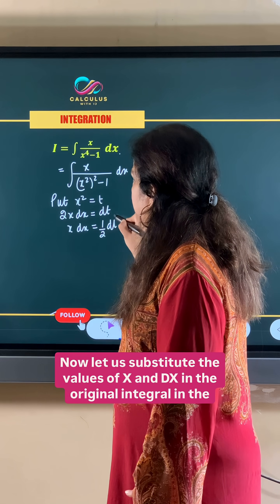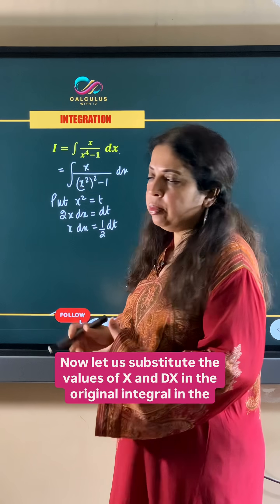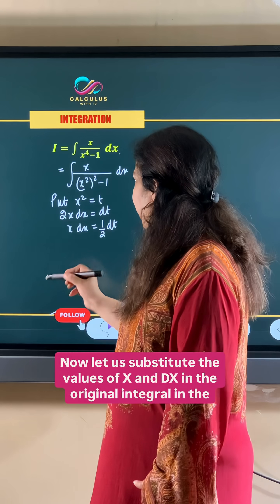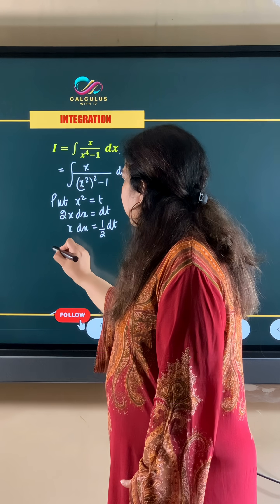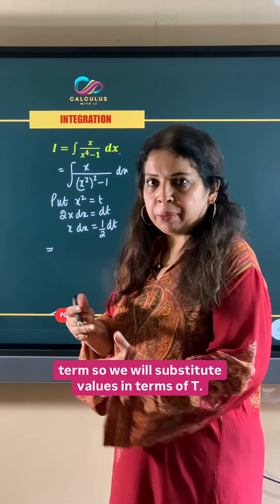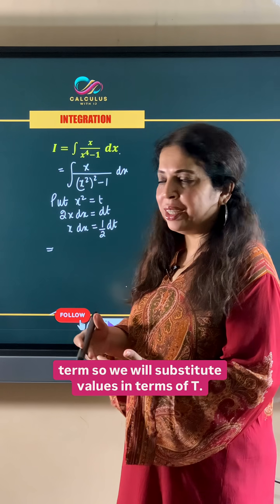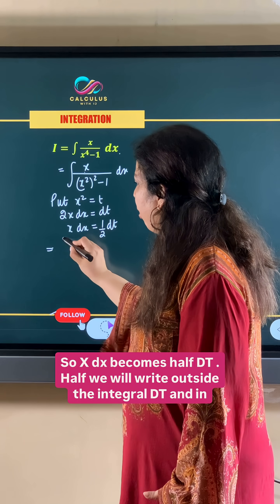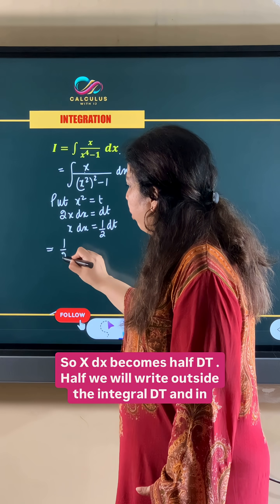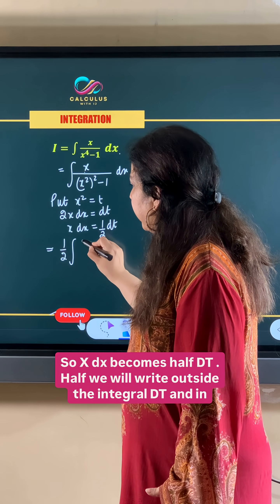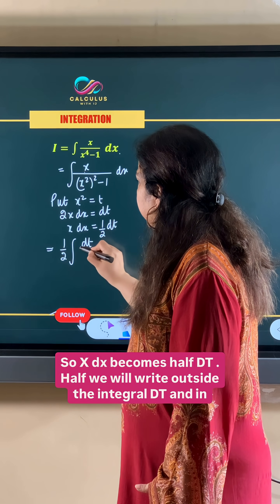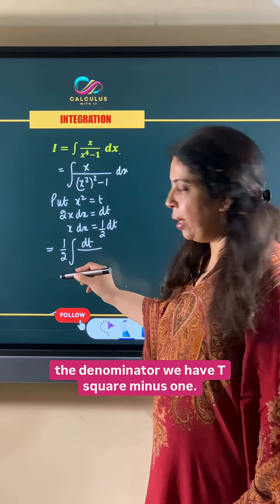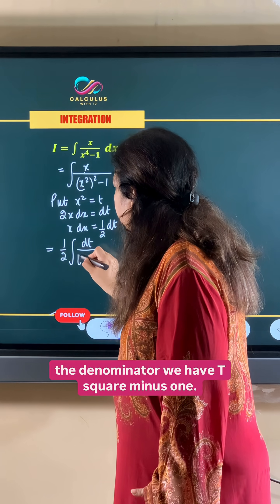Now let us substitute the values of x and dx in the original integral in terms of t. So x dx becomes half dt, and we write half outside the integral with dt in the numerator and t square minus 1 in the denominator.